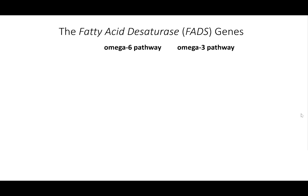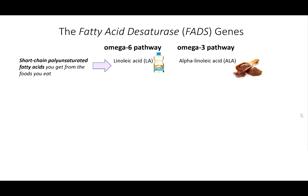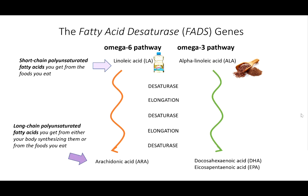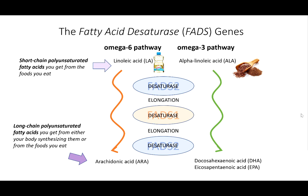Remember from the last video that there are two main categories of fatty acids: omega-6 and omega-3. These are defined by how close that kink is to the end of the carbon chain. Both the short-chain omega-6 and short-chain omega-3 are consumed via the diet, and then they are broken down, rebuilt, and elongated a couple of times by the FADS-2 and FADS-1 genes. The end results are the long-chain omega-6 and the long-chain omega-3 PUFAs.